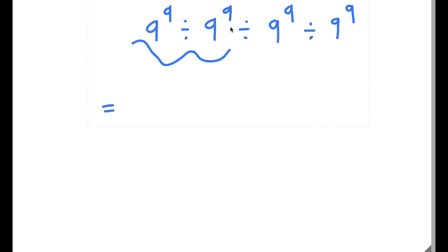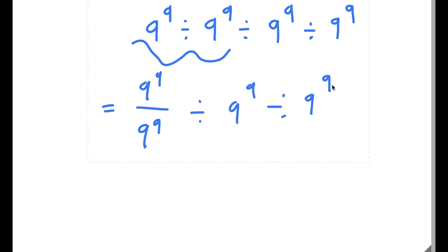Let's first simplify 9 to the power of 9 divided by 9 to the power of 9. That's simply 9 to the power of 9 over 9 to the power of 9. Now remember, we have to go in order because of PEMDAS — we can't just switch these out. What comes first is 9 to the power of 9 divided by 9 to the power of 9. Anything divided by itself is 1, so these two cancel out.